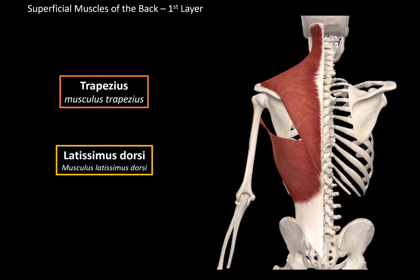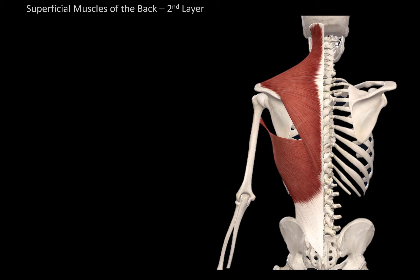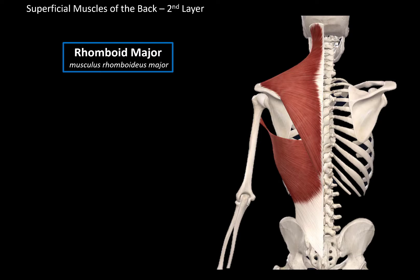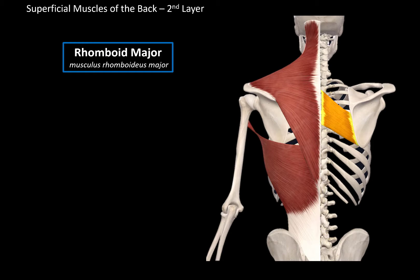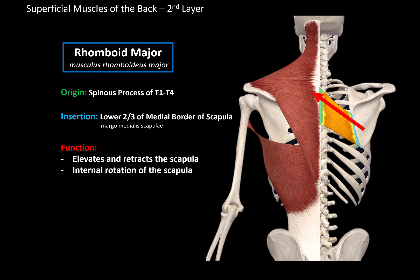That was the first layer of the superficial muscles of the back. If you remove the trapezius and latissimus dorsi, you get to the second layer, which consists of the rhomboid major, as you see here. This muscle originates from the spinous processes of T1 to T4, and inserts at the lower two-thirds of the medial border of the scapula. Its function is to elevate and retract the scapula, as well as internal rotation of the scapula.